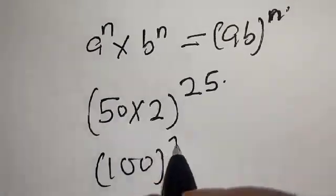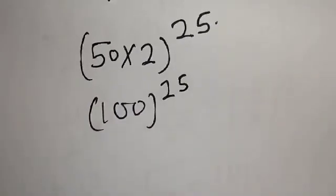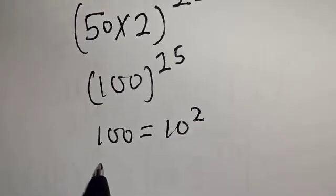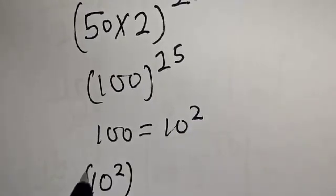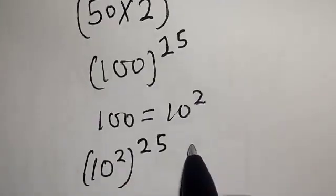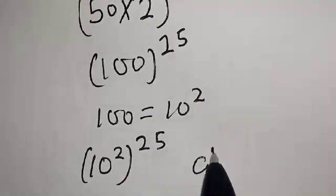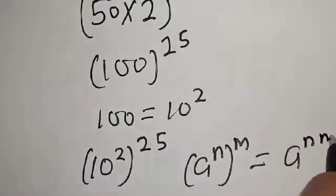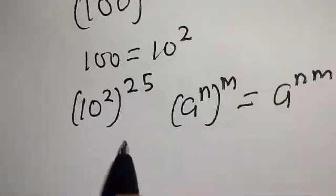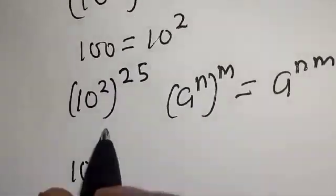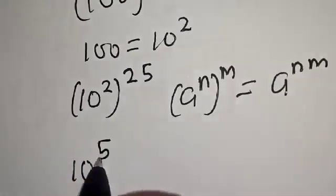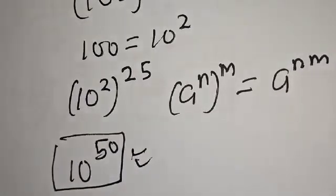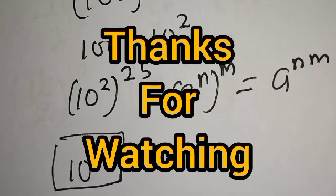Remember that 100 is equal to 10 squared. So we have 10 squared raised to power 25. Recall that if you have a raised to power n raised to power m, this equals a raised to power n times m. Therefore our final answer is 10 raised to power 50. If you have enjoyed the class, please don't forget to like, share, comment and subscribe. Thank you.